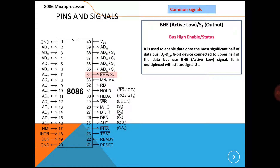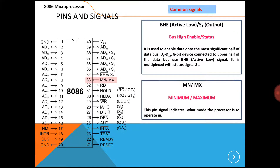Next is BHE (Bus High Enable). The 8086 has two memory banks: odd address and even address memory banks. The BHE pin is used to access the higher (odd) address memory bank, and A0 is used to access the even address memory bank.